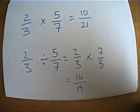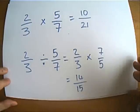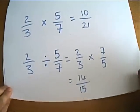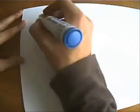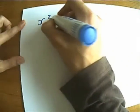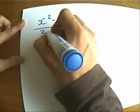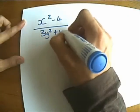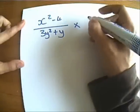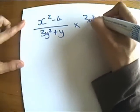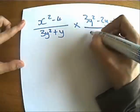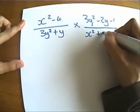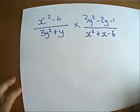Well, exactly the same principle works when you're multiplying or dividing algebraic fractions. Let's do a first little example. Let's say you were given something like x squared minus 4 over 3y squared plus y, and you're going to times that by 3y squared minus 2y minus 1, all over x squared plus x minus 6.